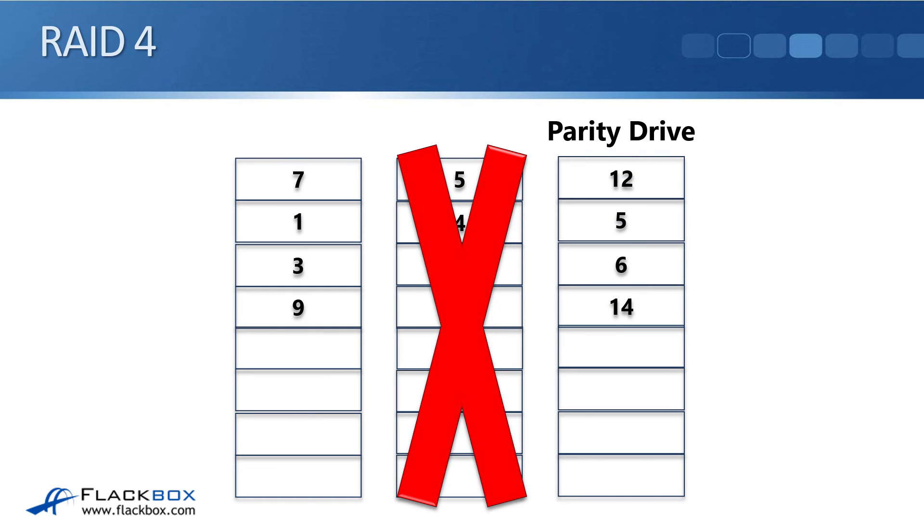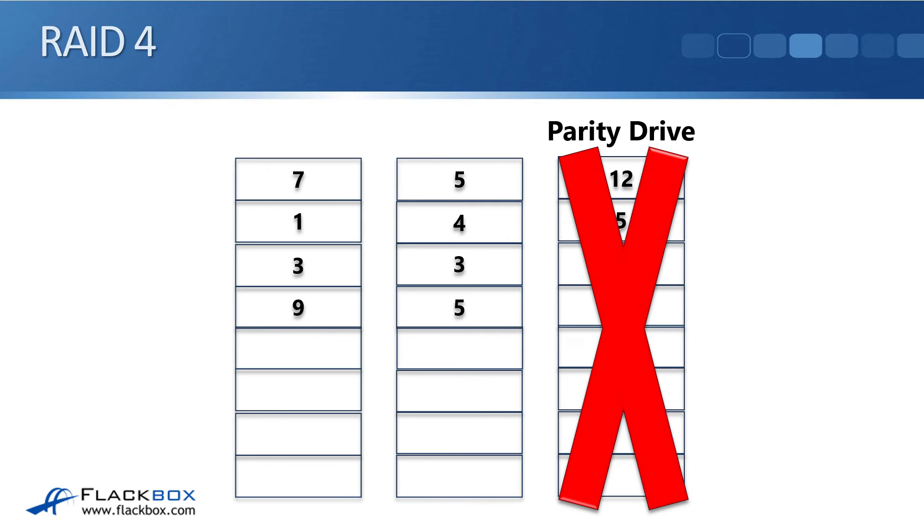So that was when the first drive failed. If the second drive fails, again, we can recreate the values that were there because 12 minus 7, it must have been 5. 5 minus 1, it must have been 4, and so on. And obviously, if the parity drive fails, we've got the data there. We can put a new disk in to replace that, and we can rebuild the parity again.